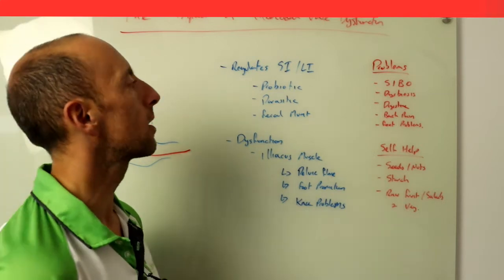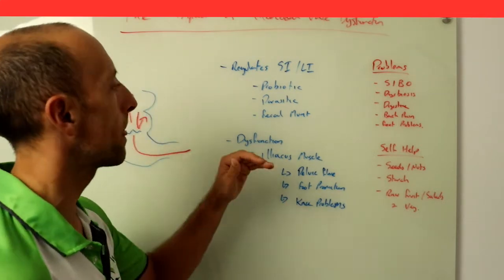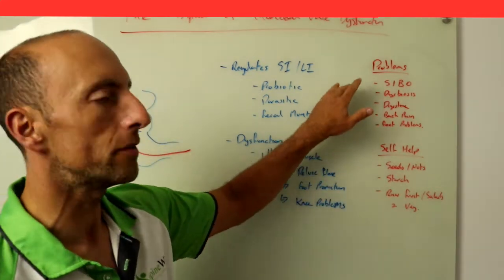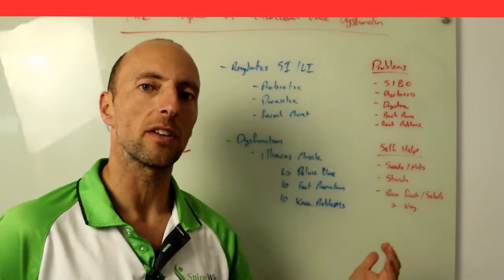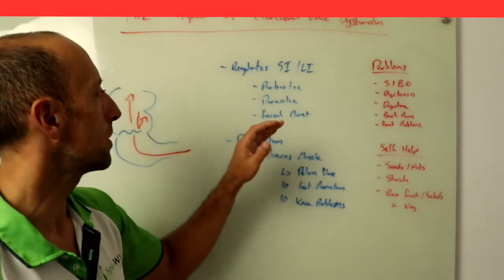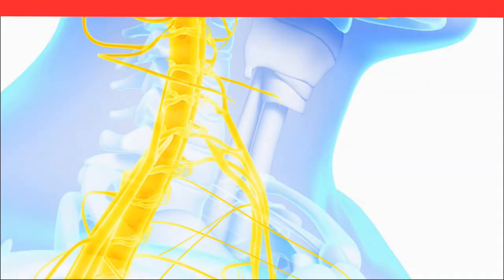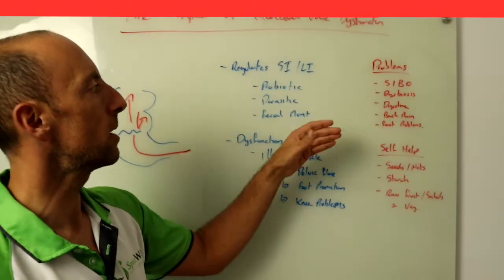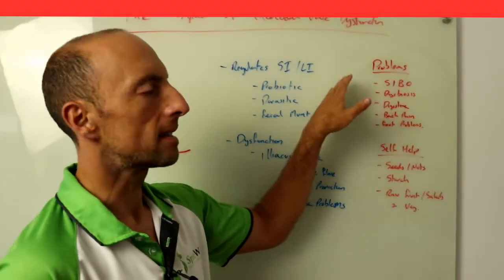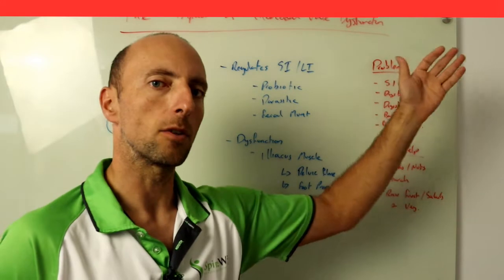So what are the things that are commonly linked to this ileocecal valve dysfunction? Well if you've got SIBO there's a good chance you have ileocecal problems. So we know that the ileocecal valve is one of the valves in the gut which is also under vagus control, vagal nerve control just like many other valves and we know SIBO is associated with vagal problems. SIBO basically is small intestine bacterial overgrowth.